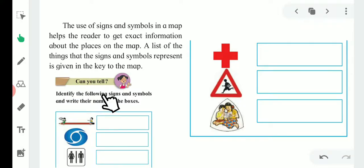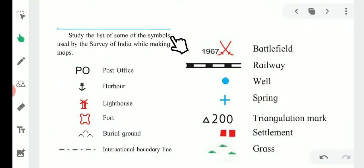Can you tell? Identify the following signs and symbols and write their name in the box. Here one box is given. You have to identify the picture and write the name in the box. First, as you can see in the first picture, one pencil is there which identifies the right to education. Second one is Doordarshan, third one is women and men, fourth one is hospital, then school ahead and books. Study the list of some of the symbols used by the Survey of India while making maps. Some signs and symbols are given here. You have to learn the signs and symbols with their name.